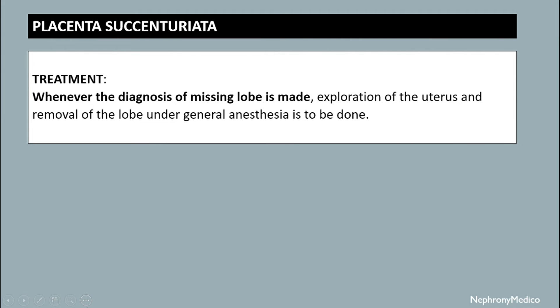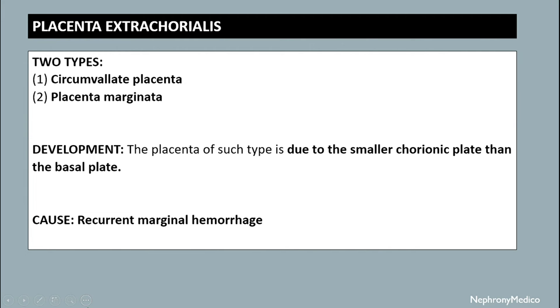Treatment of placenta succenturiata: whenever the diagnosis of a missing lobe is made, exploration of the uterus and removal of the lobe under general anesthesia is to be done. Placenta extrachorialis may be of two types: circumvallate placenta and placenta marginata.